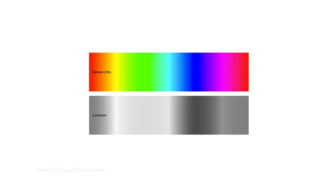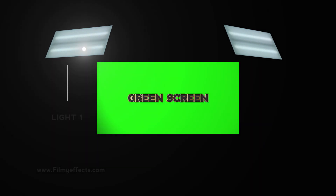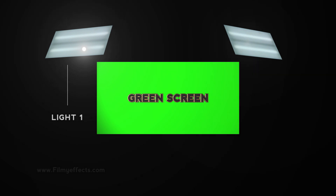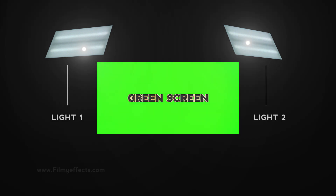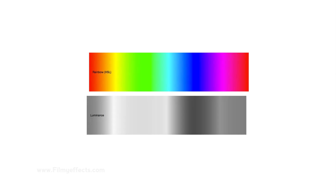In the color spectrum, we use the luminance value, which is very similar across green and blue. If we use the green screen, we will use low light. If we use two lights, it will be super bright, while the blue screen will behave differently.